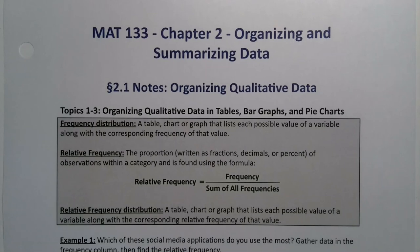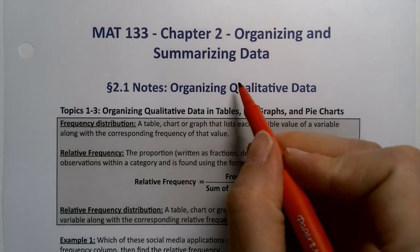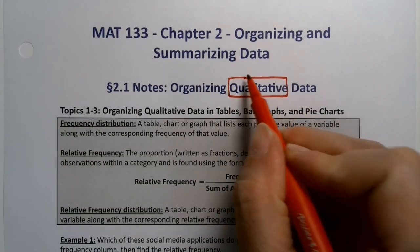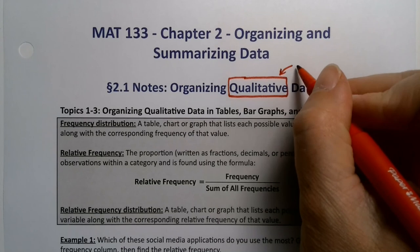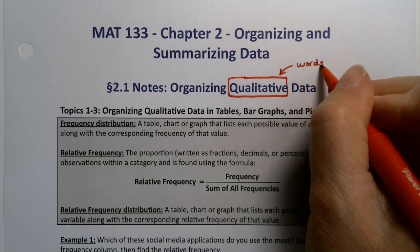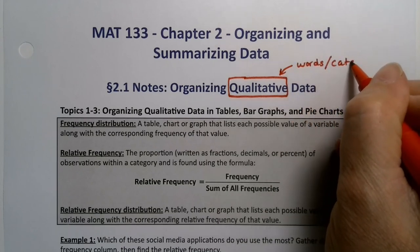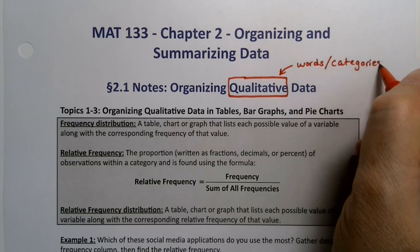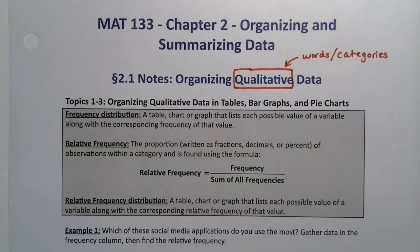In Chapter 2, we're going to organize and summarize data, which is another way of saying we're going to be making tables and all sorts of different graphs and pie charts. In Section 2.1, we're actually going to be working with qualitative data, qualitative also known as nominal, so that would be categories and words and things like that.